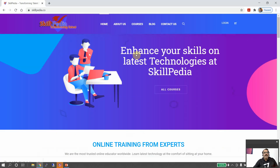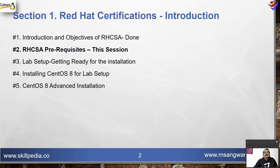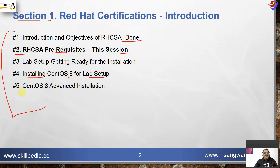These courses are for experienced people, not for freshers. My name is Ram. This is Session 2 of RHCSA certification training. This is Section 1, consisting of 5 lectures. We already completed the first part. This is the second lecture: RHCSA prerequisites. After that, we have lab setup, getting ready for installation, installing CentOS 8, and advanced installation.